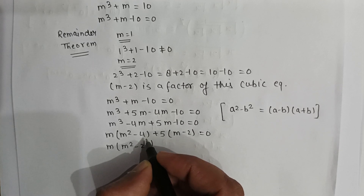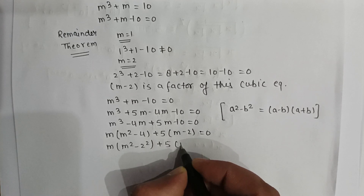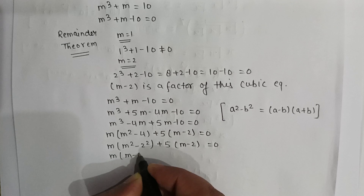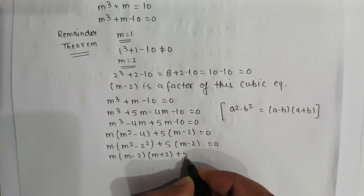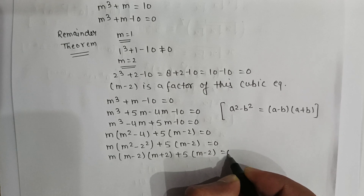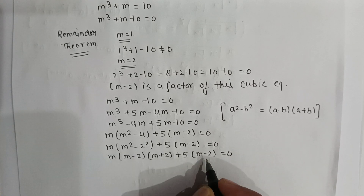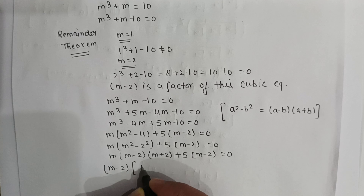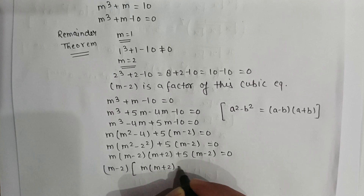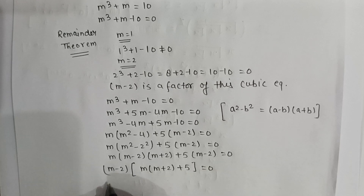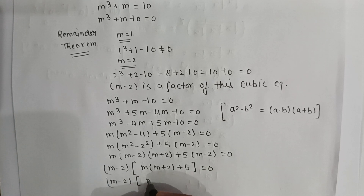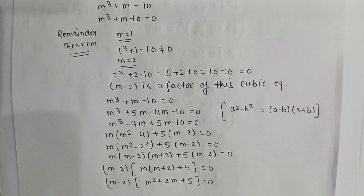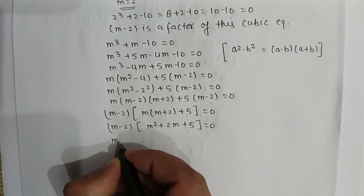Since 4 can be written as 2 squared, we have m squared plus 5m minus 2 equal to 0. So m multiplied by m minus 2, multiplied by m plus 2, plus 5 times m minus 2 equals 0. Taking m minus 2 common from both terms gives m minus 2 multiplied by m times m plus 2 plus 5 equals 0.